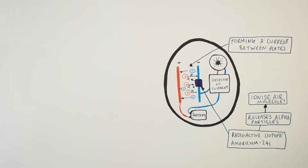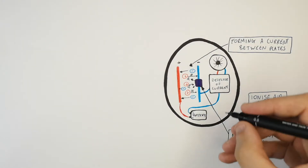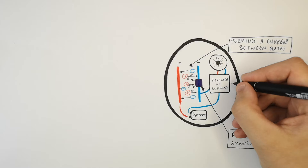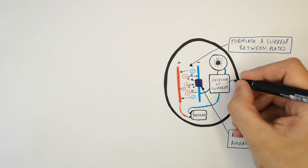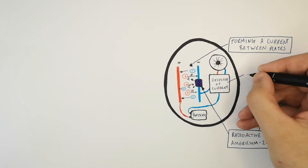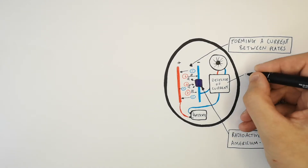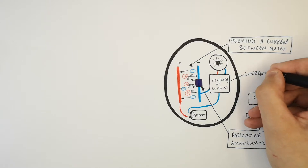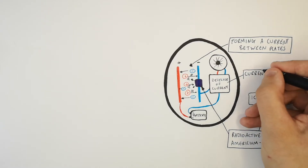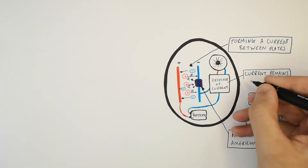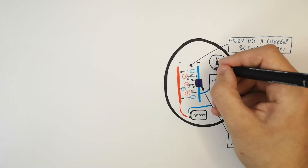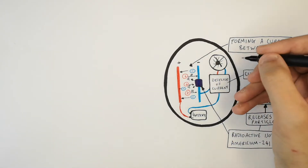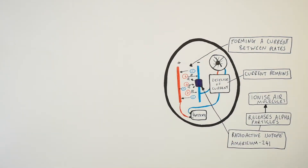Because the alpha particles are ionising the air molecules between the negative and positive plate in the smoke alarm, the current is going to form. The current remains high during this period, so the detector of current is not going to sound an alarm.